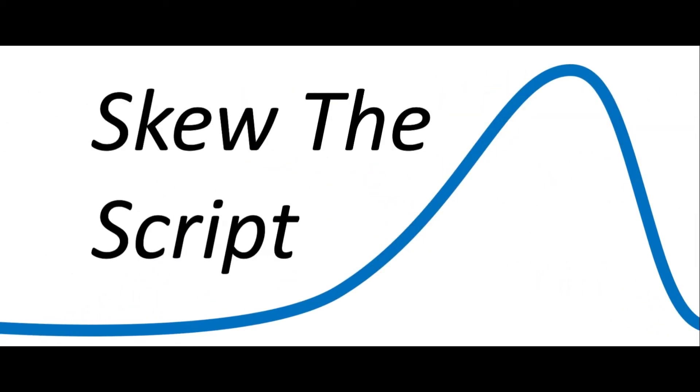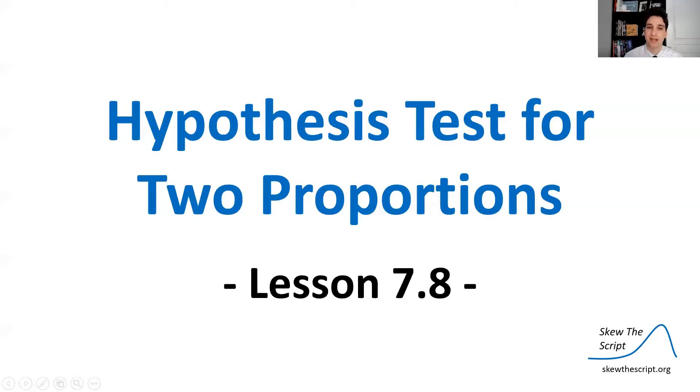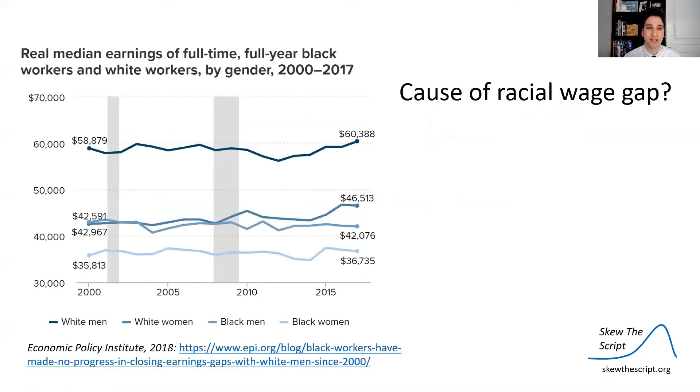Hello Statisticians! Mr. Young Saver here from Skewed the Script. We're going to look at the hiring discrimination study one more time, but this time we're going to analyze it in terms of a two-sample hypothesis test for proportions. Let's skew it! Today's lesson is on the hypothesis test for the difference between two proportions. This is lesson 7.8 in our course sequence.